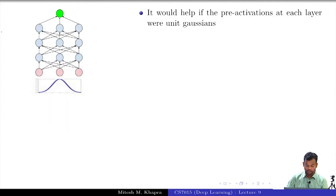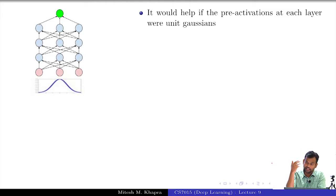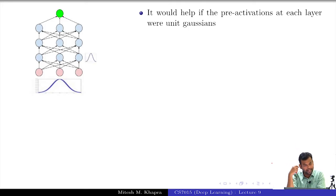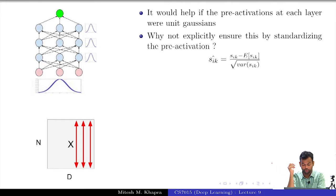That is the intuition I want to build. It would help if the pre-activations at every layer are unit Gaussians. For the input we made a case that we will make it a unit Gaussian so that things are very nice and all inputs are coming from the same distribution. But we now realize that at every layer we have an input — H3 is an input, H4 is an input and so on. So why not ensure that at every layer your H1, H2, H3 also looks like a Gaussian distribution?